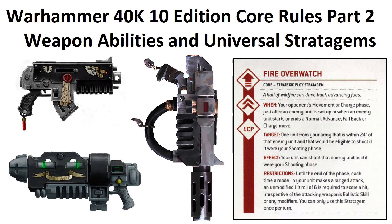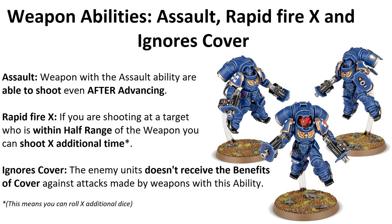So we can play as fast and as accurate as we can. Here are the weapon abilities. The first one: Assault. When a weapon has the Assault rule, it can shoot after advancing. So with this kind of weapon, you get a little bit longer threat range — usually 1d6 inches longer.